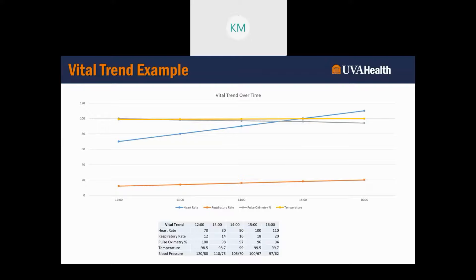My heart rate is a little up. My respiratory rate is a little up. My pulse oximetry is a little down. My temperature is a little up. My blood pressure is a little lower. This is a case of the littles. And if you see all of these littles — trends where it's just a little bit of this, a little bit of that — and there are a lot of them, something bad is probably happening.